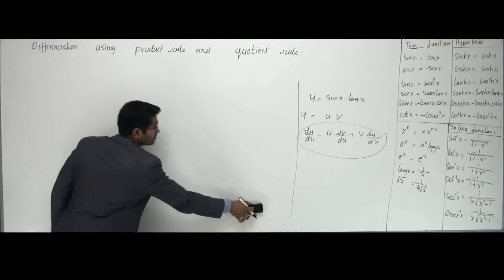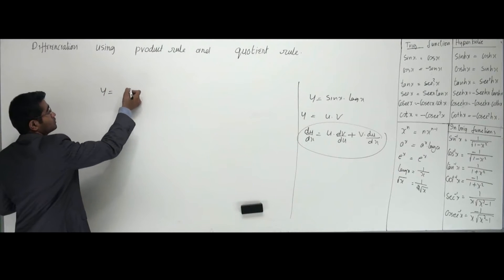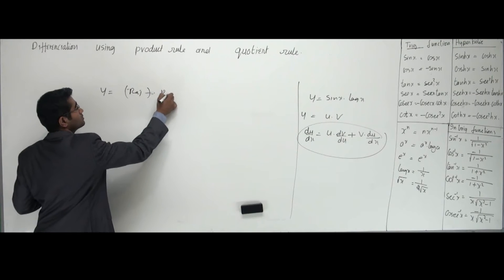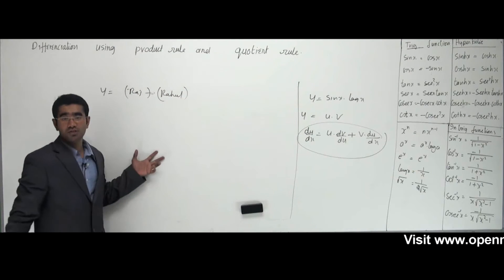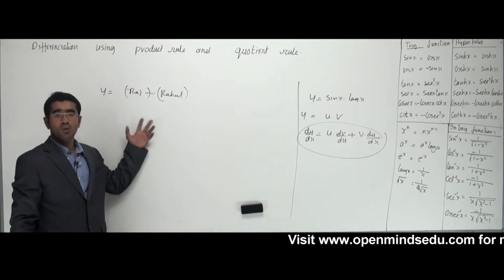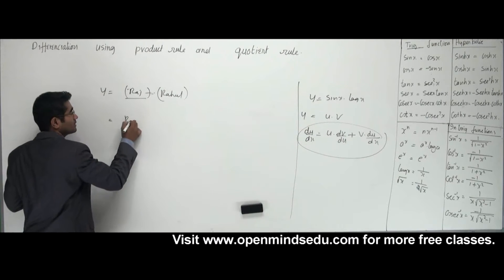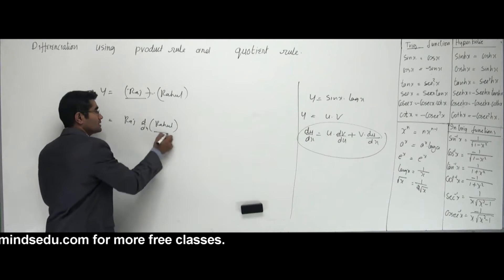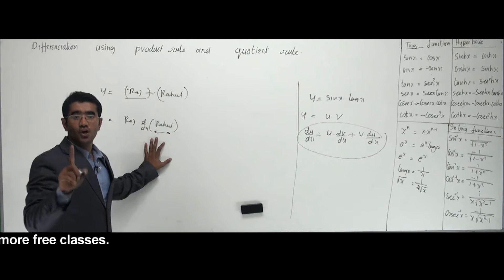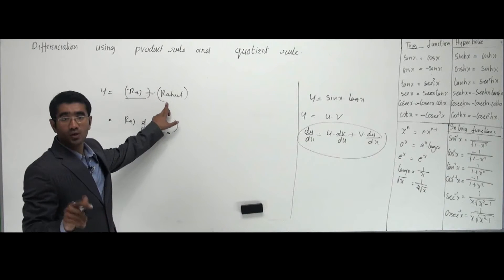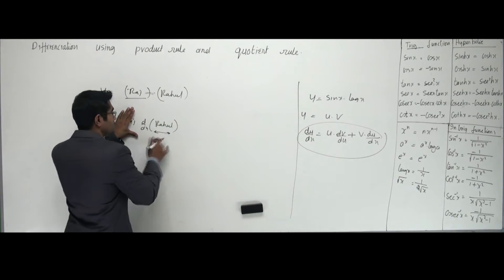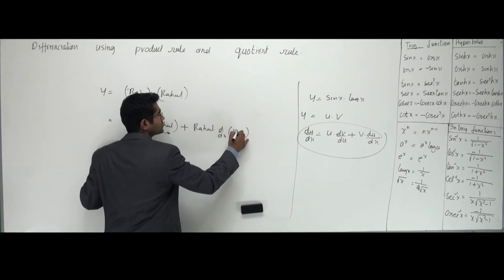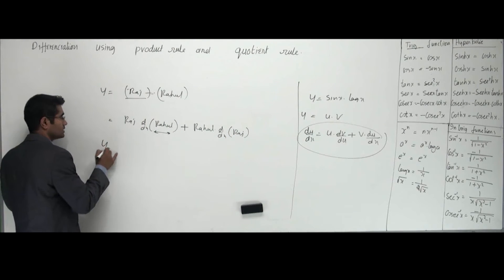Think of it as a 'belting rule.' If I have two functions — say Raj and Rahul — I tell Raj: you stand still, and I differentiate Rahul. Then I tell Rahul: you stay, and I differentiate Raj. The rule is we can only differentiate one function at a time — keep one aside and differentiate the other.